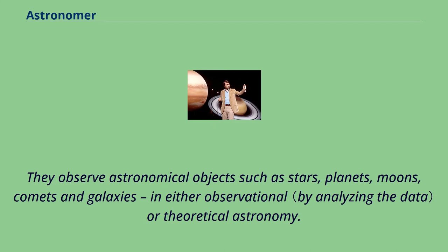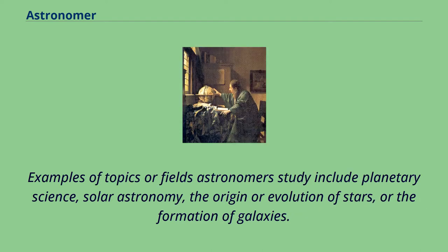They observe astronomical objects such as stars, planets, moons, comets and galaxies, in either observational or theoretical astronomy. Examples of topics or fields astronomers study include planetary science, solar astronomy, the origin or evolution of stars, or the formation of galaxies.